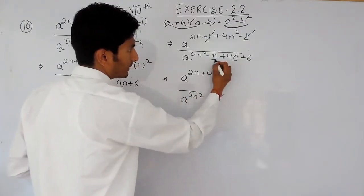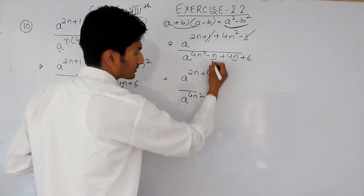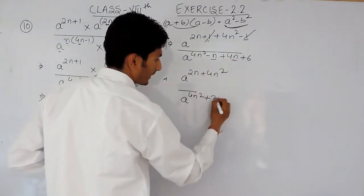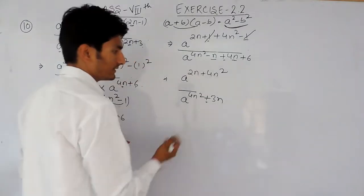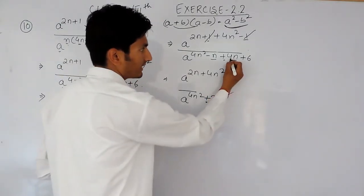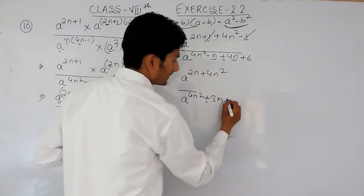These are like terms, so 4 plus minus is minus, 4 minus 1 is 3. And the sign will be of greater value, means the sign will be positive because greater value has positive sign, plus 6.